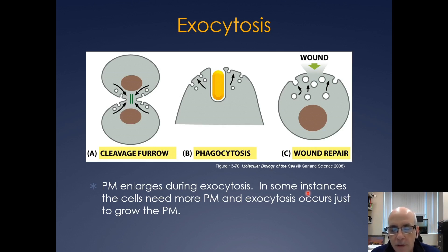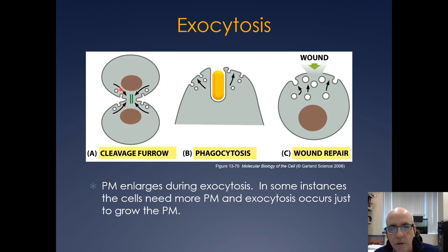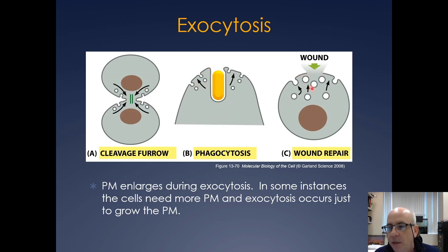One other thing is that oftentimes you're just fusing vesicles with the plasma membrane to grow it — it doesn't always have to release components. For example, after mitosis and during cytokinesis, you need to actually grow the plasma membrane to get two cells, so you have vesicles fusing for the sole purpose of growing the membrane to create the cleavage furrow. The same thing happens in phagocytosis, where vesicles fuse with the plasma membrane to help engulf a bacterium. Also in wound healing, if a plasma membrane is cut, you will fuse a whole bunch of vesicles to the plasma membrane to seal up that wound.